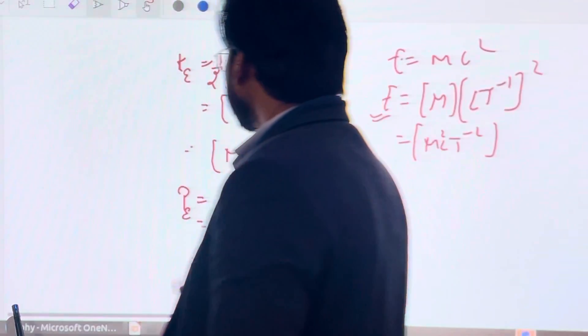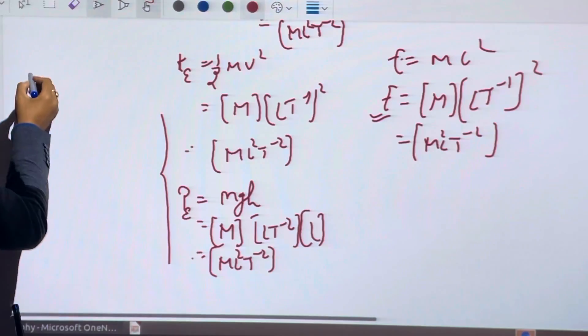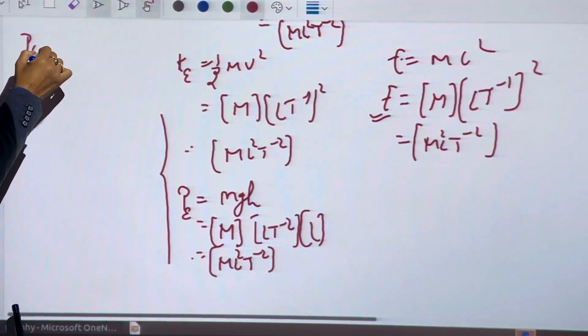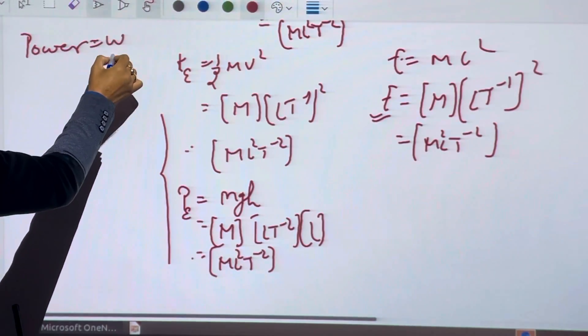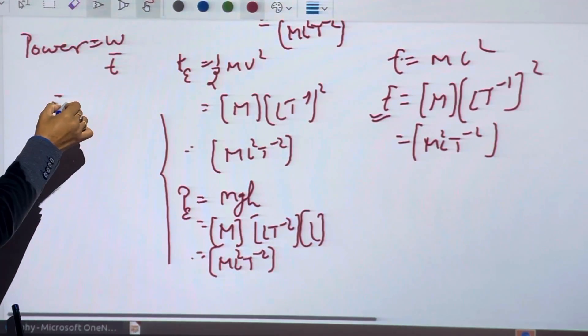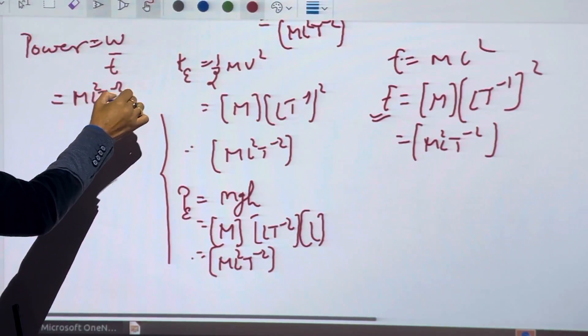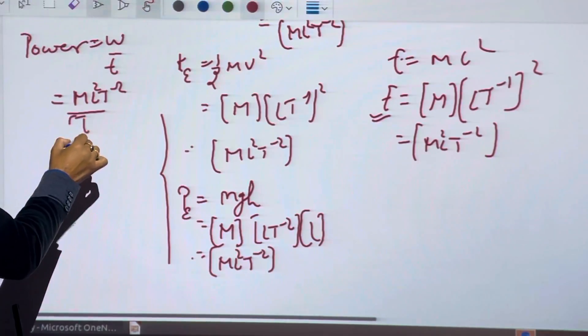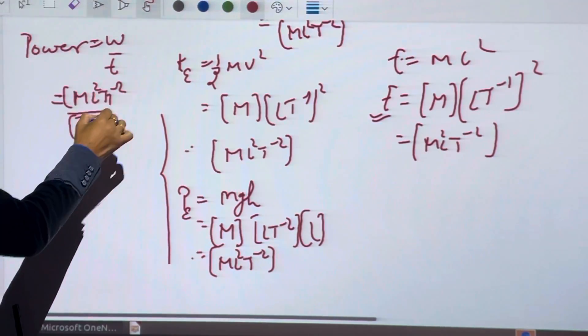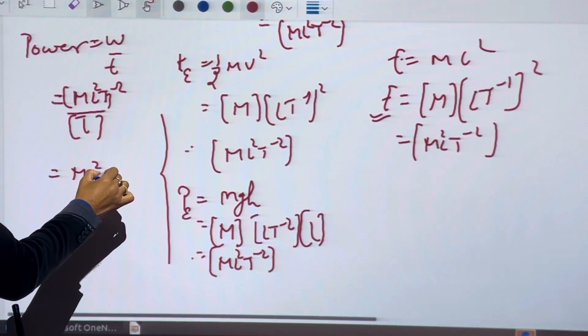Now some new topics, for example power. Power is rate of doing work. P equals W upon T. Dimension of power is ML²T minus 2 upon time T, so dimension of power is ML²T minus 3.